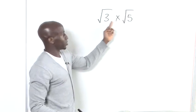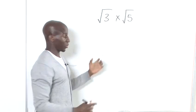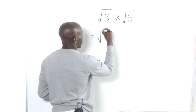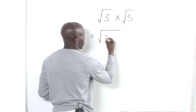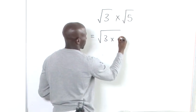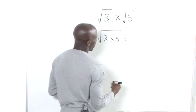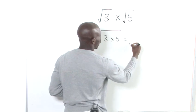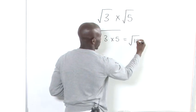So, we bring the two numbers under one square root. That's our first step. So, you've got a larger square root, 3 times 5. And now, we think of what 3 times 5 is and that's simple. 15.